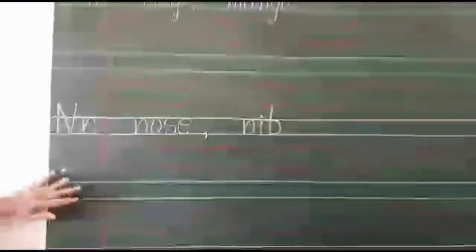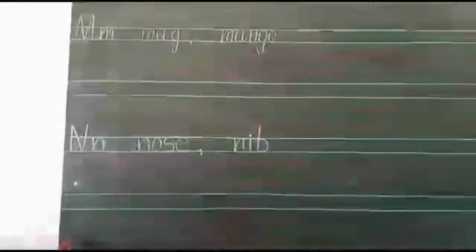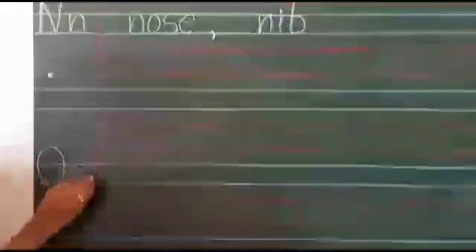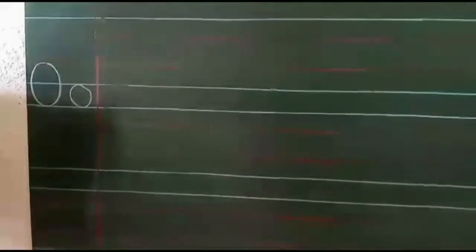Now, leave a line. Which letter will we go? O. Capital letter O, script letter O. O for owl, O for orange, O for ostrich, O for onion.